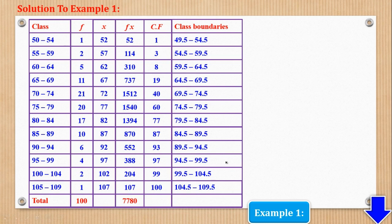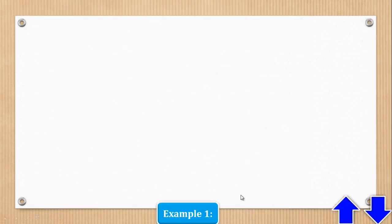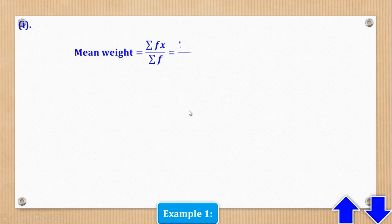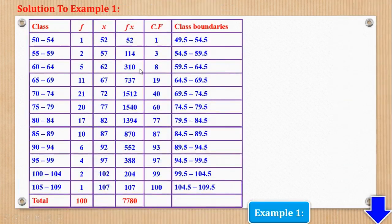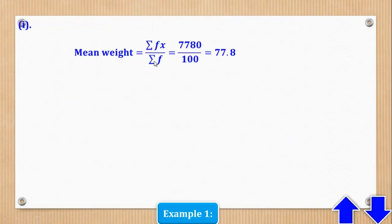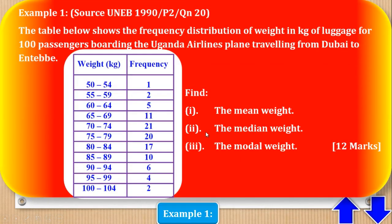Now that we have generated the table, we can start answering the questions. For Roman numeral (i), the mean weight: mean equals summation of fx over summation of f. Summation of fx is 7780 and summation of f is 100, giving 7780 divided by 100 equals 77.8.